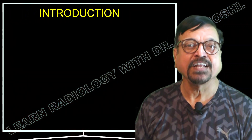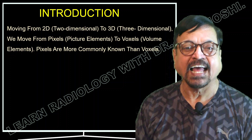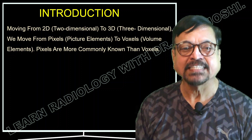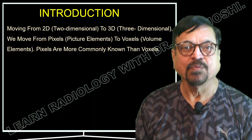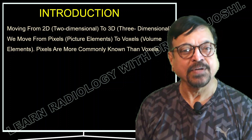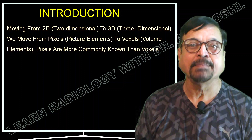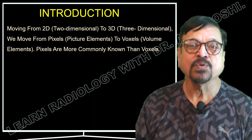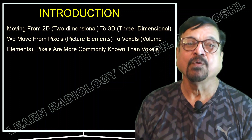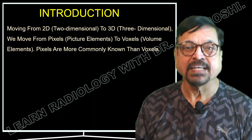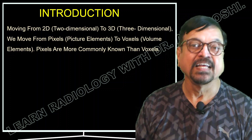With this brief introduction, let us get going on the topic of pixels and voxels. What is a pixel? What is a voxel? We are going to see this in today's lecture. Moving from 2D, that is two-dimensional, to 3D, that is three-dimensional pictures, we move from pixels — that is picture elements — to voxels, which are volume elements.